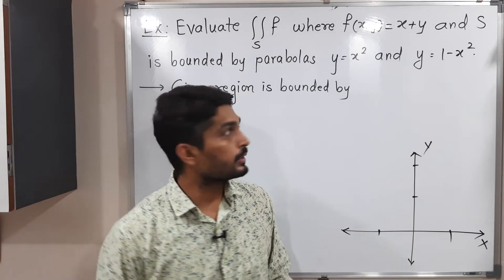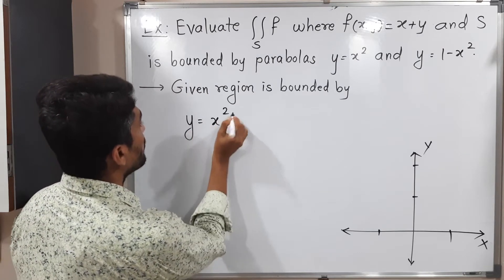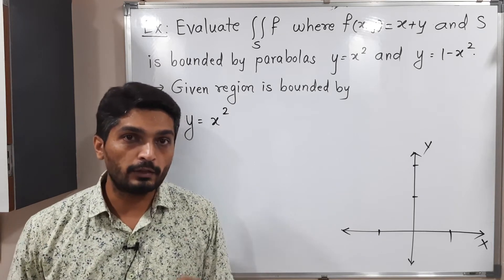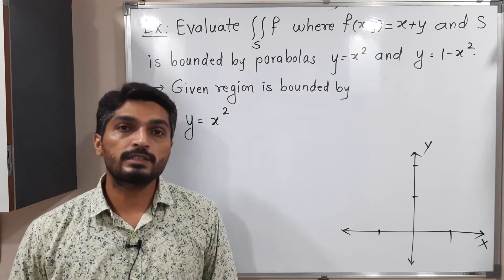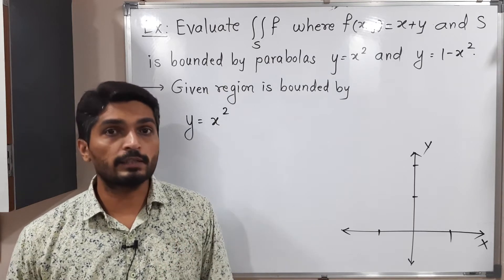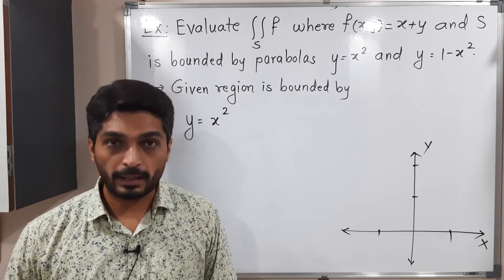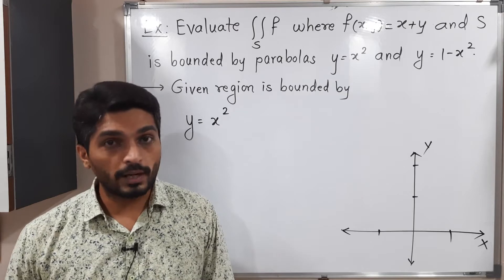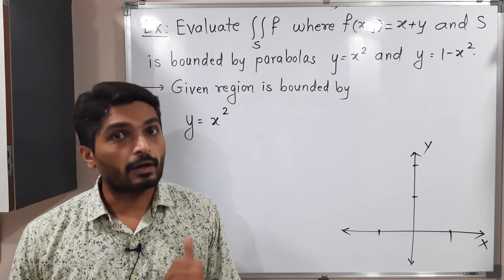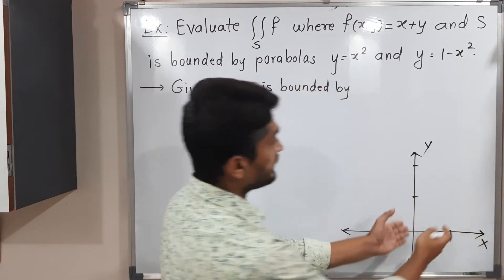Let us consider the given curves. The first curve is y = x². When the power of one variable is 1 and the power of the second variable is 2, it is a parabola. In this equation, power of x is 2 and power of y is 1, so it is a parabola symmetric about the y-axis. Since y has a plus sign, the parabola opens in the positive y-axis direction.